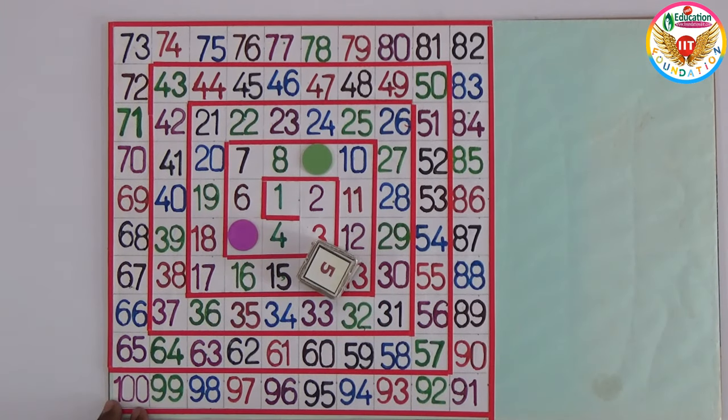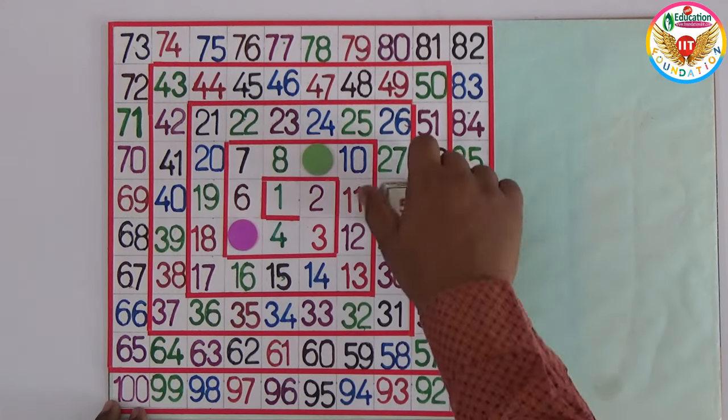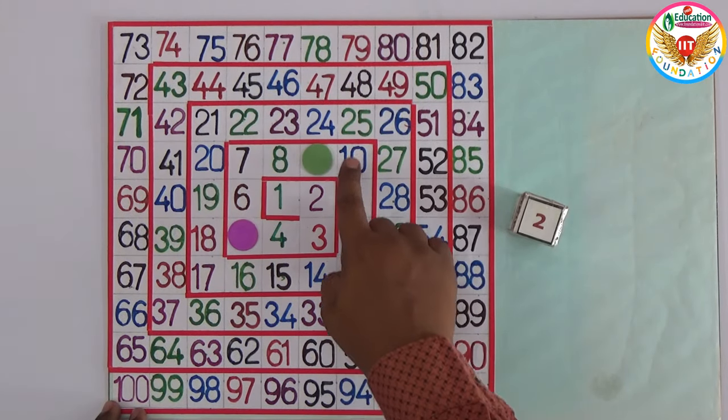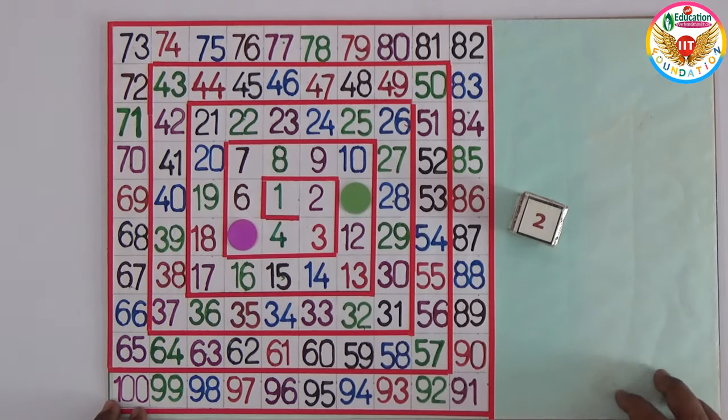They got two, so we count one, two—landing on eleven. Eleven is not a multiple of four, so they don't play again. The second person starts and gets four.